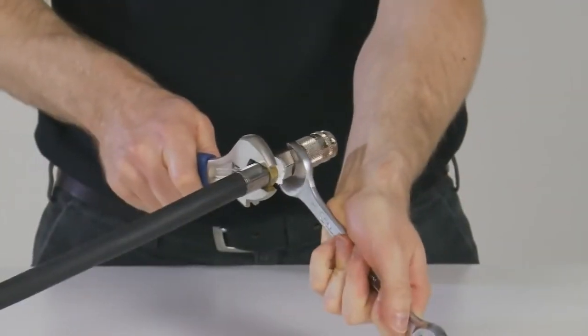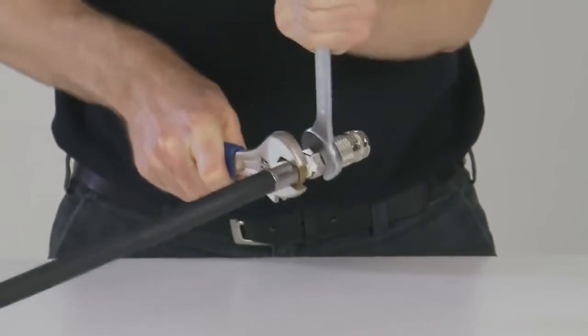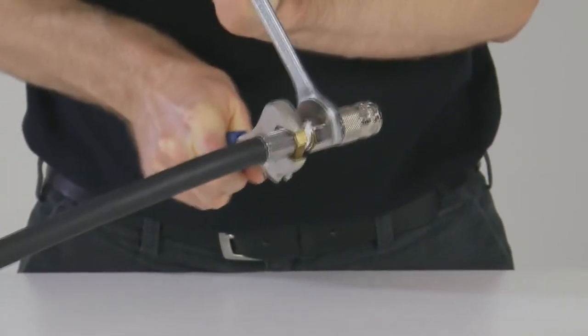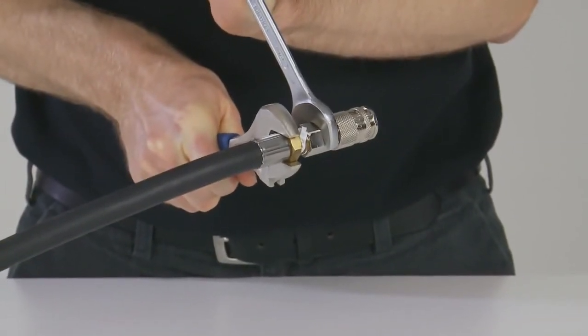Firstly, screw a female socket, provided as part of the 3M approved range of plug and socket sets, onto the end of the cast and tighten.